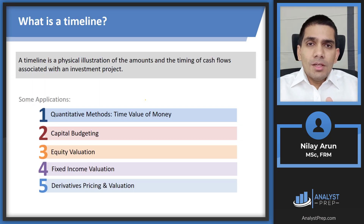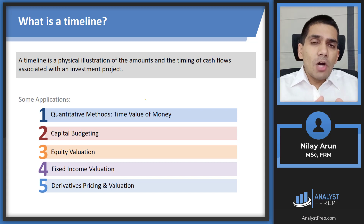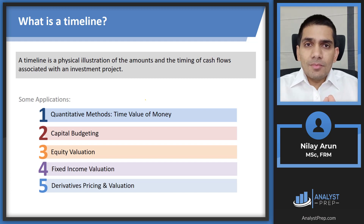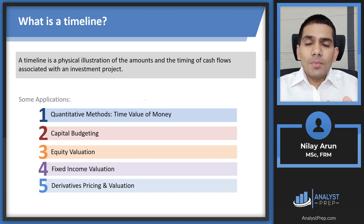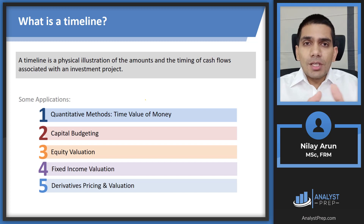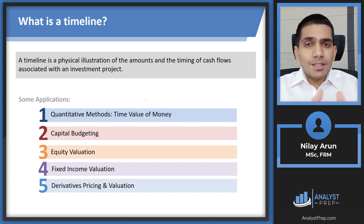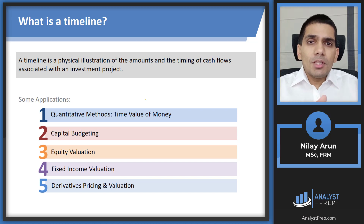What is the timeline? The timeline is basically an illustration of the amounts and the timing of cash flows from any investment project. The way we divide the time intervals on the timeline, it should be equidistant. So if you're using years, it should be one year, two years, three years, and so on. If you're using semiannual periods, then it should be six months, twelve months, eighteen months, and so on.